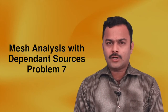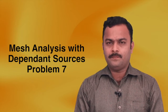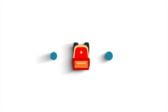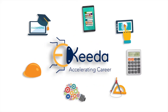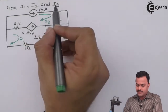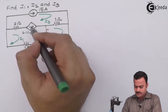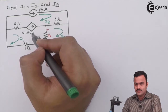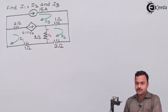In this video we are going to see how to apply mesh analysis for a problem where a current source is given between two meshes. The speciality of this problem is a voltage-controlled current source (VCCS) given between two meshes, and we will see how to solve the problem.